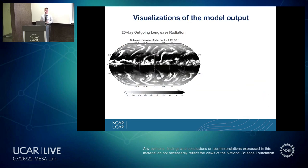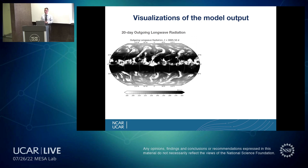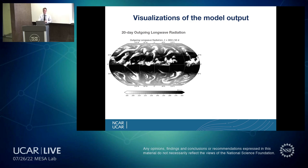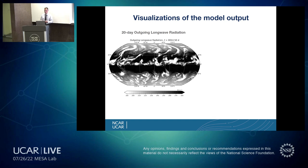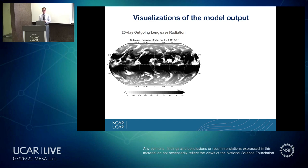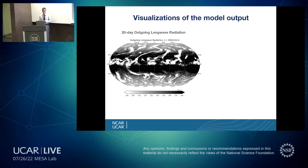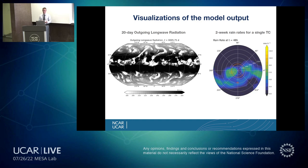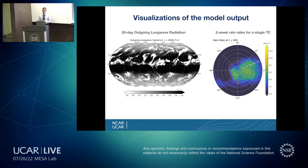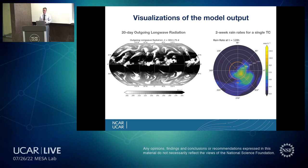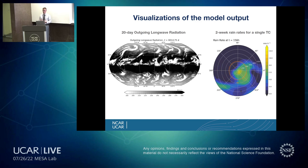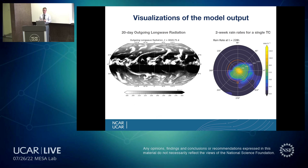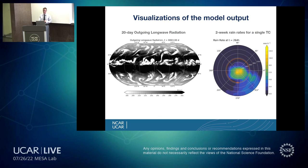Our simulation ran for three years and produced 714 tropical cyclone events, all with up to two-week lifespans. Here's a visualization of the outgoing longwave radiation for a 20-day period. Above the equator in the intertropical convergence zone, you can see small tropical cyclones forming and spinning up. On the right, you can see the rain rates for a single tropical cyclone over a two-week time span, where the cyclone begins to organize, tightens up its core, and rain rates get very high in that inner core region.